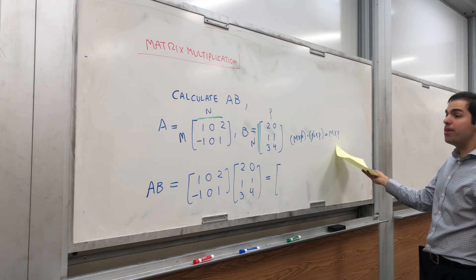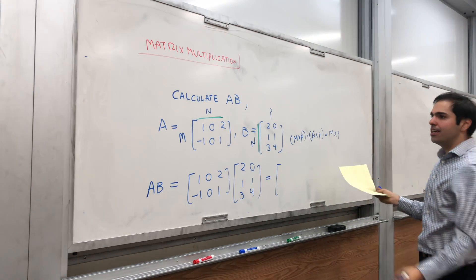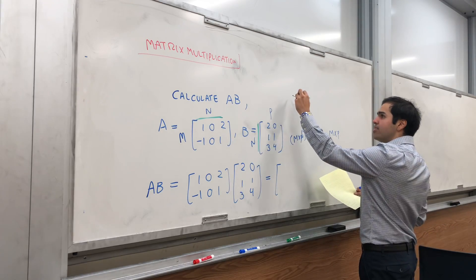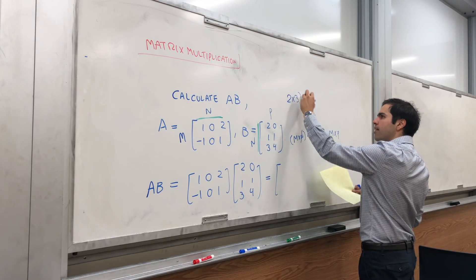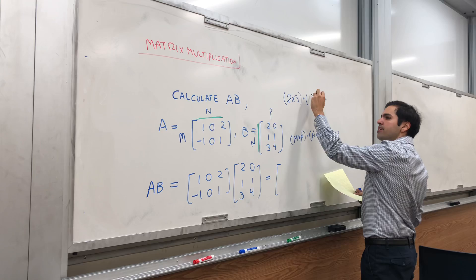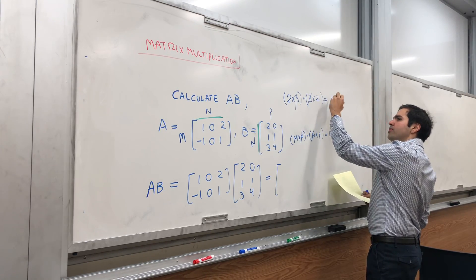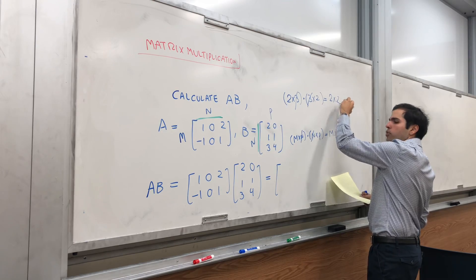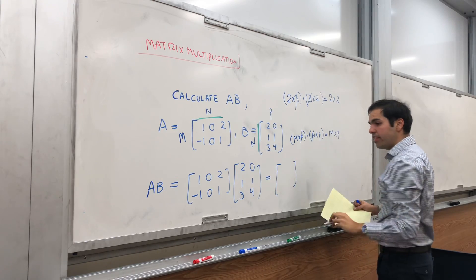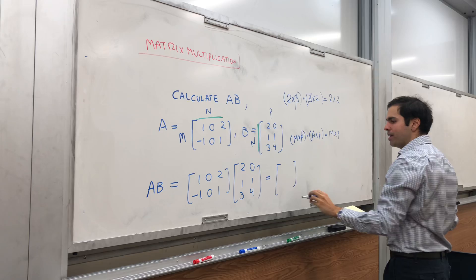So AB will be of size m by p. In this case what is this? So A is 2 by 3 and B is 3 by 2. If you cancel that out you get AB will be 2 by 2. So at the end we'll just have a 2 by 2 matrix.